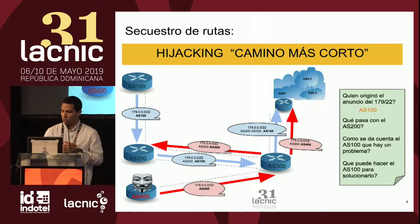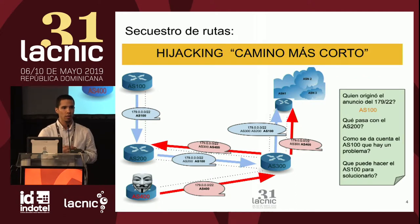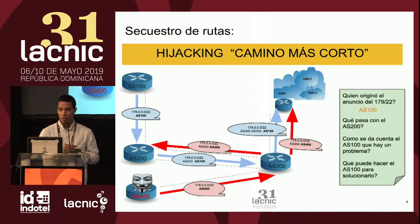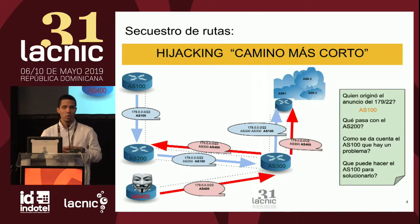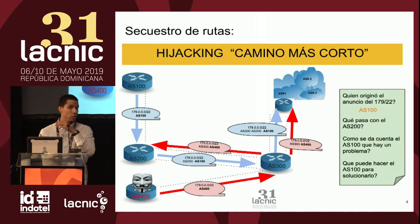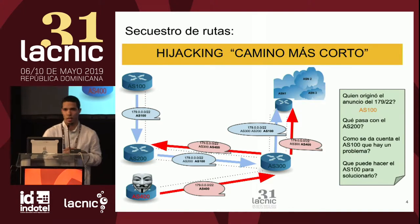¿Cómo se da cuenta el AS100 que hay un problema? Una opción es ir y buscar información en el WHOIS de esta organización que está publicando este anuncio y ver si esta información, el teléfono de esta organización, es correcta, ver si se puede contactar a esta organización. Pero esta opción puede ser no tan factible, no tan eficaz, porque puede ser incluso que este anuncio se esté realizando en otro continente con personas que no hablan el mismo idioma.